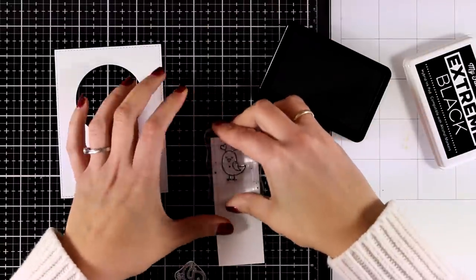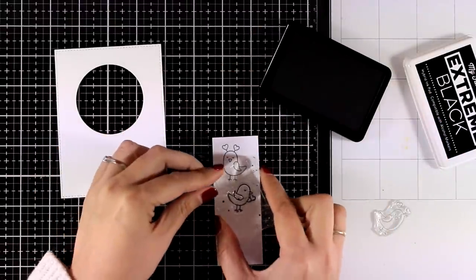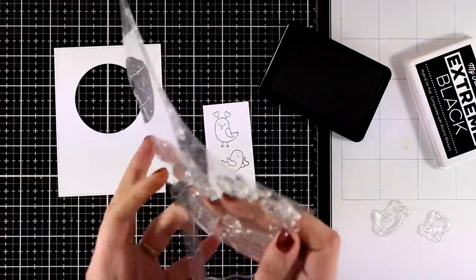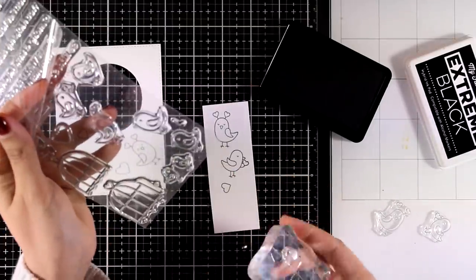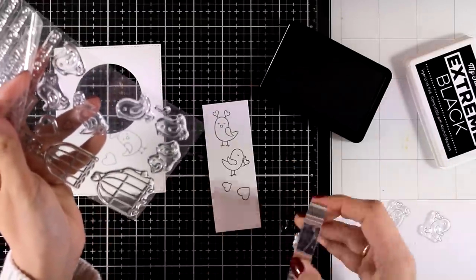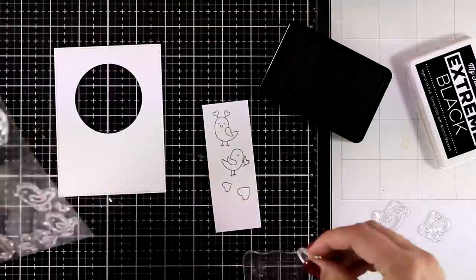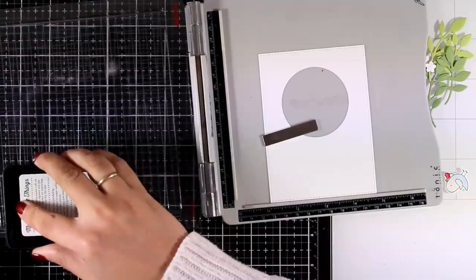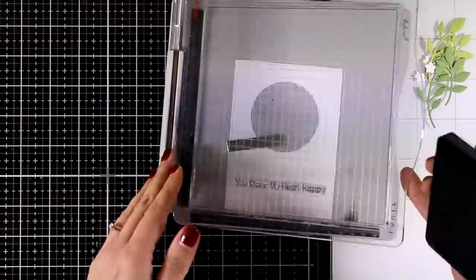For that I will use a new adorable stamp set released by My Favorite Things for January. It is called Tweet Hearts and it is super cute. It is packed with little birds that you can use to create love scenes. Some of them are holding hearts, they are looking into each other, they also hold little envelopes with hearts on top and there are also lots of sentiments. Now I have stamped a couple of birds. I used my alcohol markers to color them and also used a matching die set to cut them out.